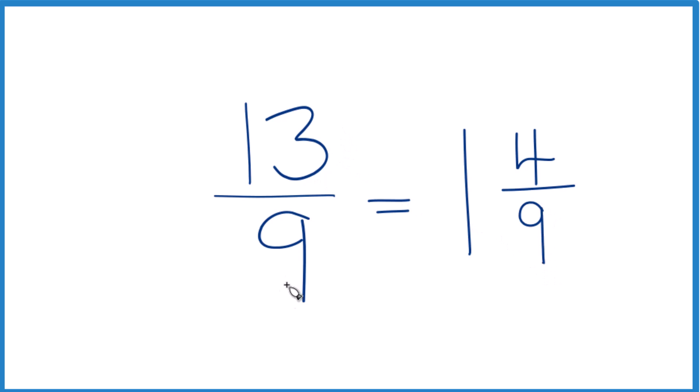So 13 ninths, this is an improper fraction because the numerator's larger than the denominator. 13 ninths is equal to the mixed number 1 and 4 ninths.